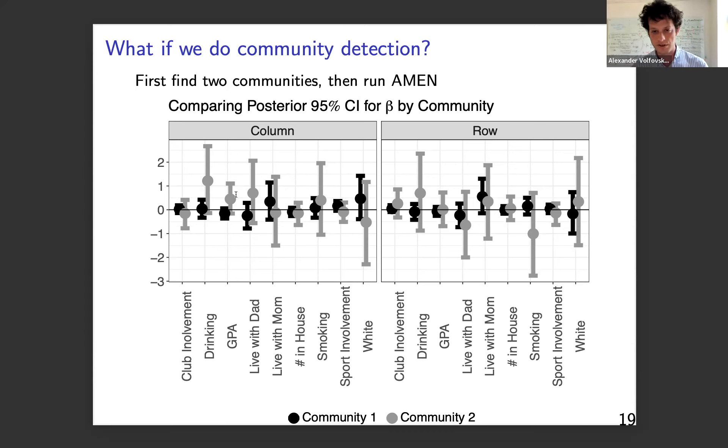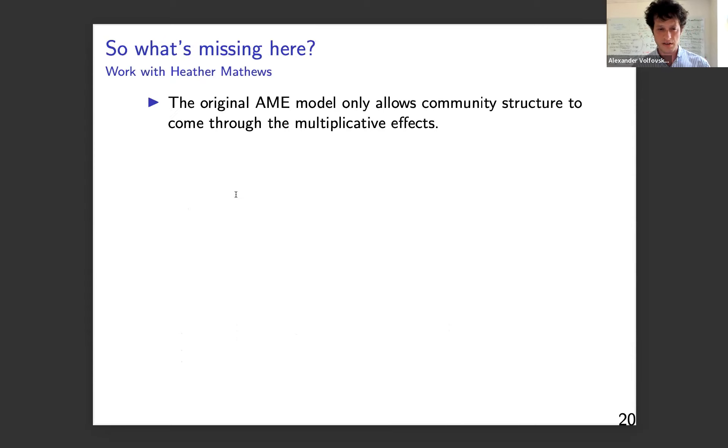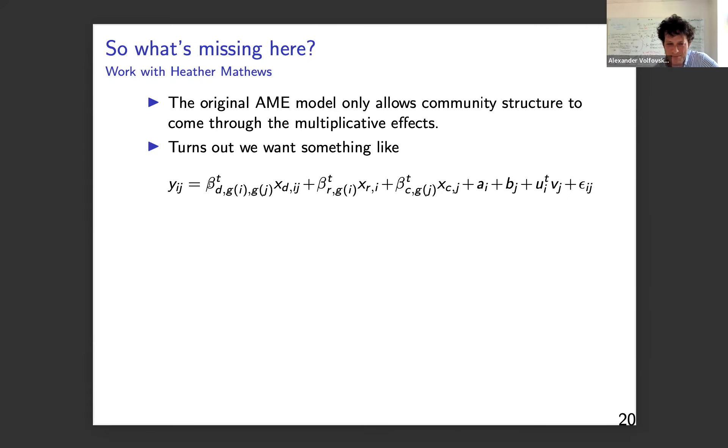There's row and column covariates. You see that sport involvement increase has a positive effect on your popularity. Being white in this particular school has a negative effect on your sociability and so on. This is not a very exciting school yet. Now, let's imagine that some oracle came and told you or you ran some community detection algorithm on this and then said, OK, well, now I have two communities. Let me try to model the networks of those communities. And so here we've done exactly that. So this is a naive way of splitting the network into two communities and doing the exact same network regression in each of them. And you see that some of the communities are slightly different.